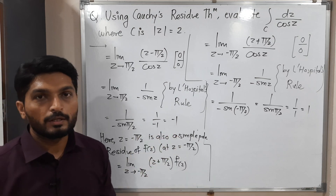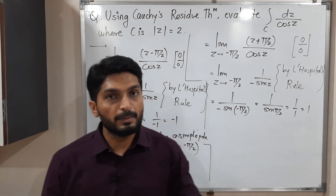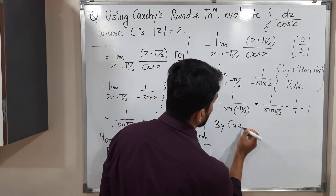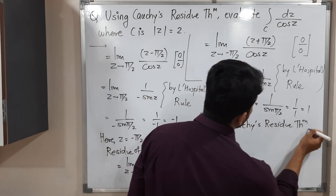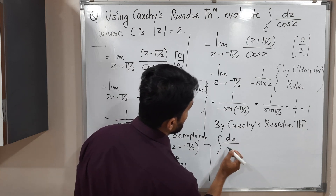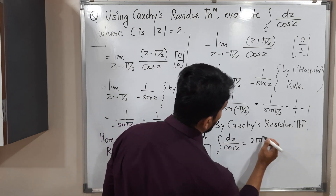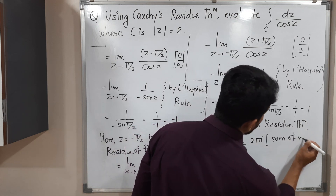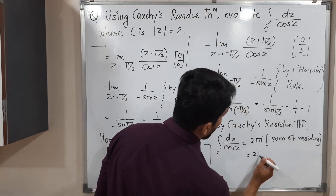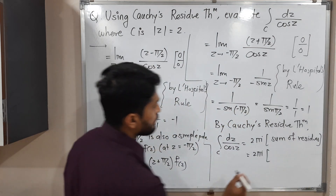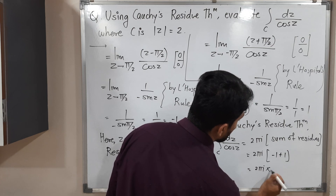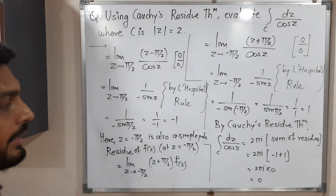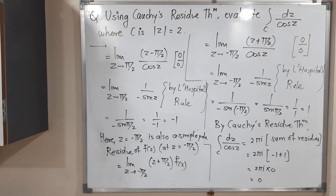We have residues −1 at z = π/2 and +1 at z = −π/2. By Cauchy's residue theorem, the integral over C of dz upon cos z equals 2πi times the sum of residues = 2πi × (−1 + 1) = 2πi × 0 = 0. So the required value of the integral is 0. Example is over. Thank you, see you in the next video.